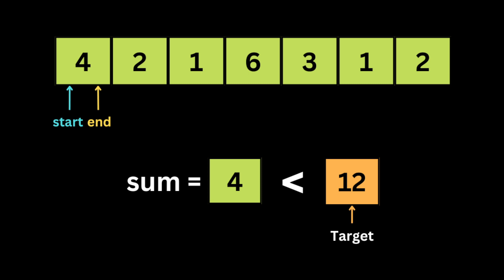The sliding window technique is a two-pointer based algorithm. We use the two pointers to search for the subarray and use the window sum to check if it equals the target. We initialize both start and end pointers at the first integer, 4. Since we have only positive integers, expanding the window increases the sum and shrinking it decreases the sum. The sum is 4, which is less than 12, so we expand by moving end by one.